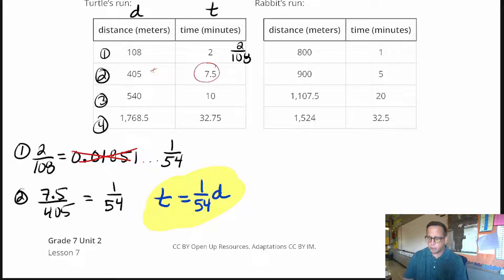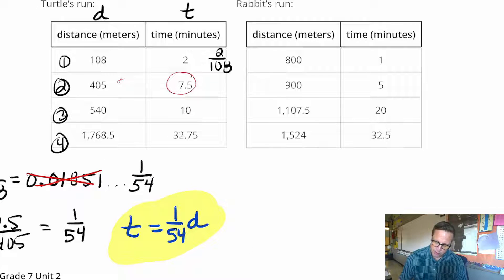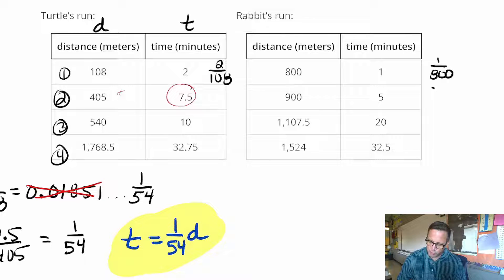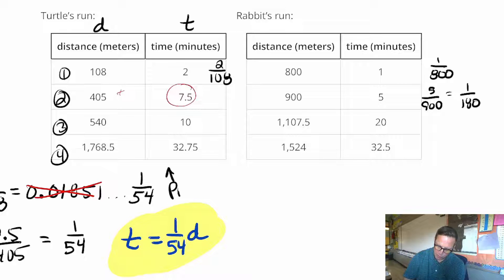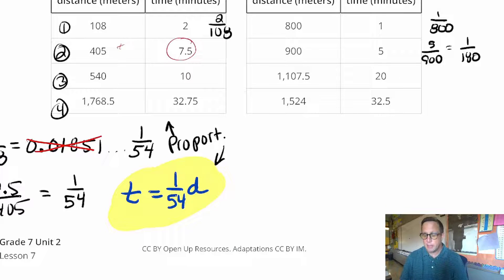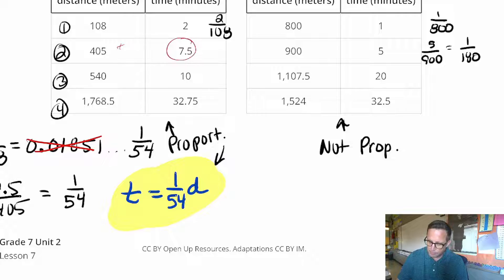For the next one, again, I'm just going to do the fractions. I'm going to do 1 divided by 800, which is 1 800th. And then if we do 5 over 900, that is definitely not going to come out to 1 800th. That's going to come to 1 over 180, and then so on and so forth. So this one was proportional. That was proportional because we had a constant proportionality. This one is not proportional.